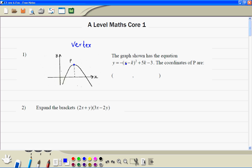If you look at the bracket here, it's x minus k, so this sign is always going to be the opposite for the x coordinate, so this coordinate is just k.